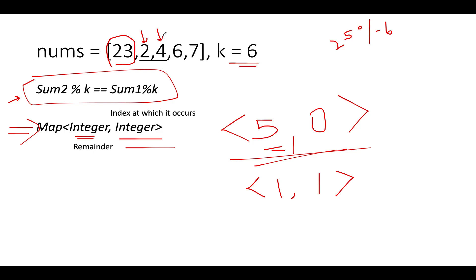Let's proceed ahead. The next element that we have is 4. So 25 plus 4 gives you 29. 29 modulus 6 what do you get?